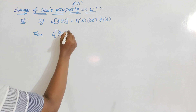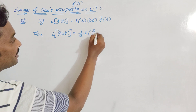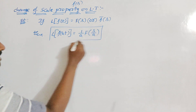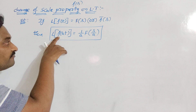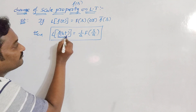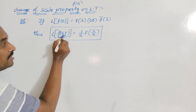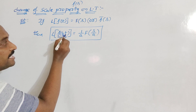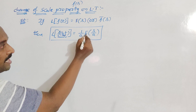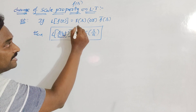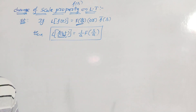Then the Laplace transformation of f of at is equal to 1 by a into the function of s by a. This is the result of the Change of Scale Property. So if the given function is in the structure f of at, we can use this property: its Laplace transform is 1 by a times the function of s by a — meaning in the function of s, wherever we have s, we replace it by s by a.